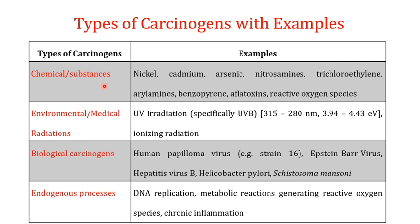The second type of carcinogens are known as environmental or medical radiations. The important type of environmental radiation is UV radiation, especially the UVB portion of the UV spectrum from 280 to 315 nanometers. The full UV range starts from about 150 to 400 nanometers, but the carcinogenic portion specifically is the UVB region. For medical radiations, examples include ionizing radiation used in cancer treatment and X-rays used in diagnostics.